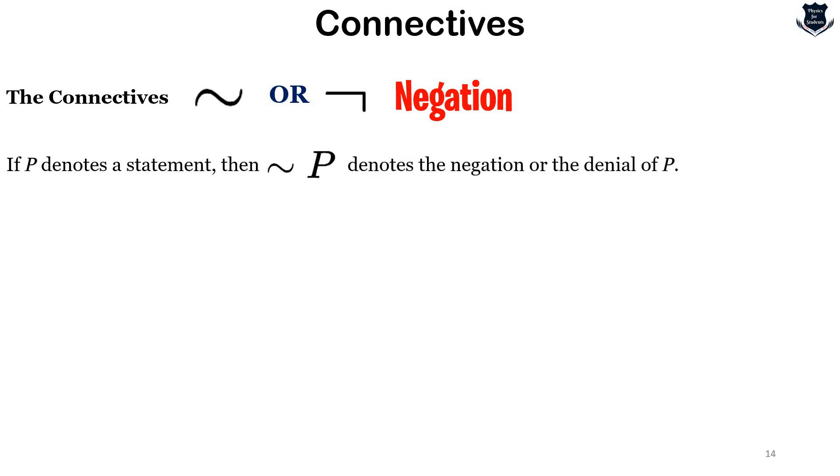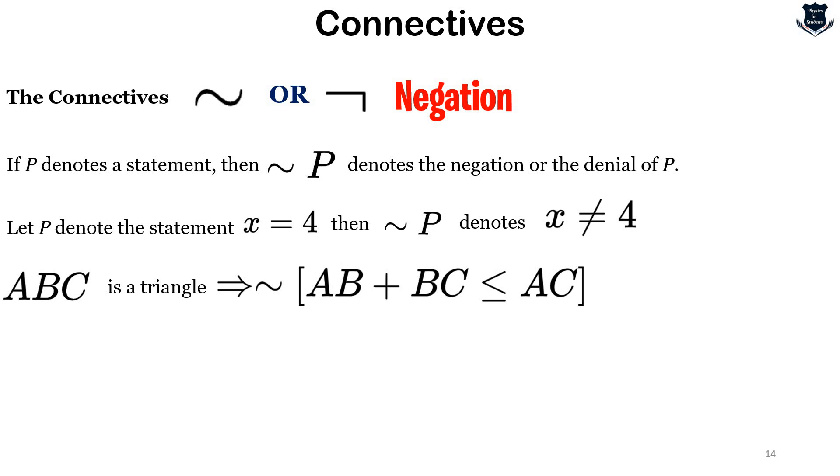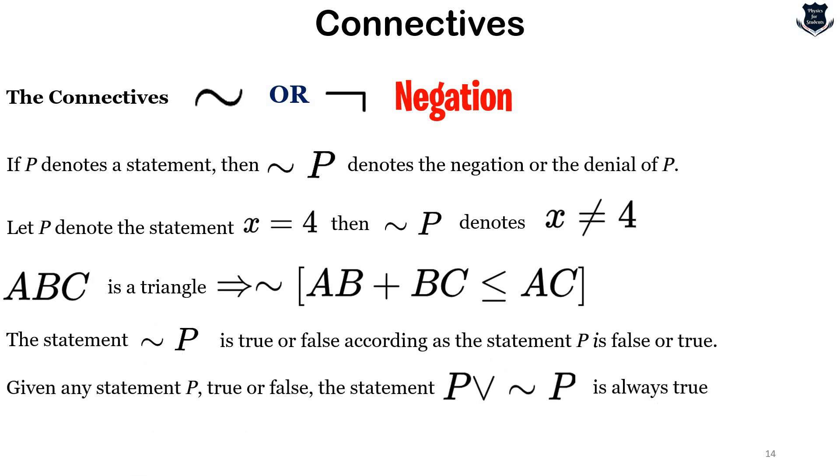Now let's discuss negation. If p denotes a statement, then ¬p denotes the negation or denial, meaning 'not p.' Let p denote the statement x = 4, then ¬p denotes x ≠ 4. For example, if ABC is a triangle, then it implies that ¬(AB + BC ≤ AC). The statement ¬p is true or false according to whether the statement p is false or true. Given any statement p, the statement 'p or ¬p' is always true, and the statement 'p and ¬p' is always false.